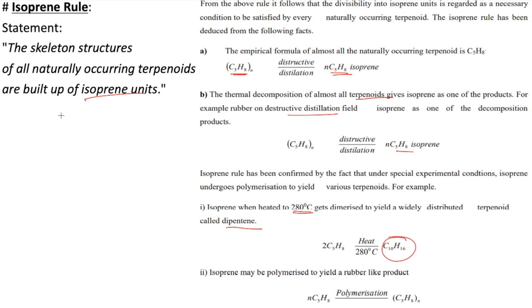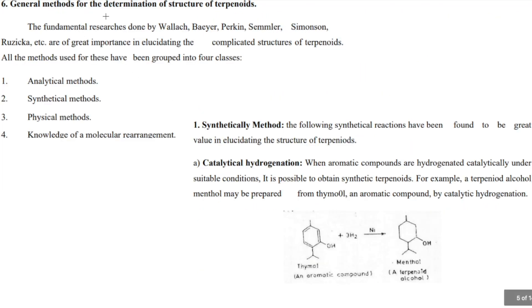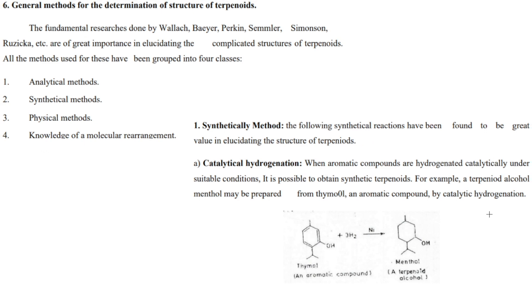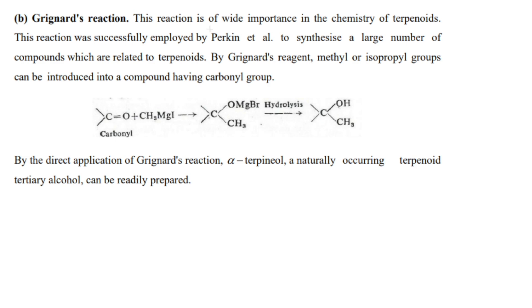There are some general methods for the determination of the structure of terpenoids: analytical methods, synthetical methods, physical methods, and knowledge of molecular arrangement. In the synthetical method, some general synthetic reactions are of great value. For example, catalytic hydrogenation: when aromatic compounds are hydrogenated catalytically under suitable conditions, it is possible to obtain synthetic terpenoids. For example, the terpenoid alcohol menthol may be prepared from thymol by catalytic hydrogenation using nickel as a catalyst.